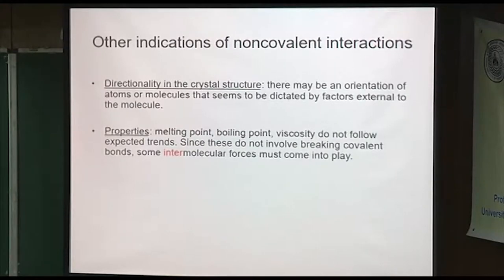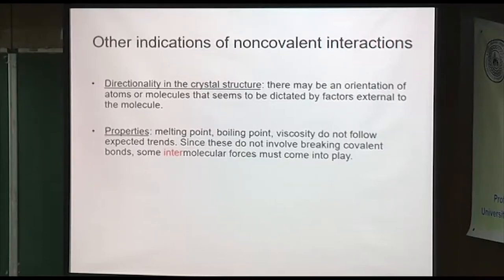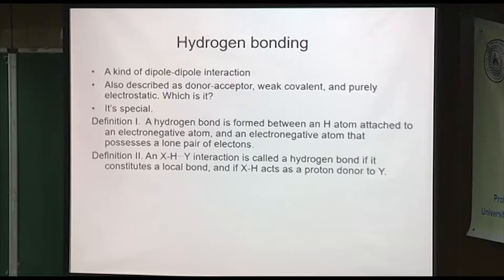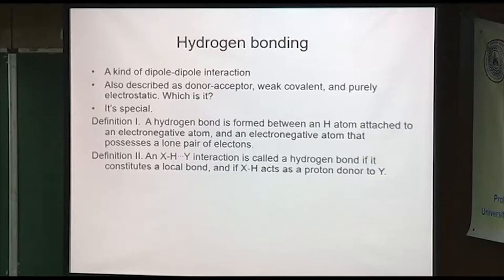Indications for non-covalent bonding include properties like melting point and boiling point — that's classic general chemistry, explaining why water has a higher boiling point than hydrogen sulfide. The directionality in the crystal structure may be influenced by this. The kinds of non-covalent interactions include dipole-dipole, donor-acceptor, weak covalent, and electrostatic. Hydrogen bonds — some people call electrostatic, but some don't.